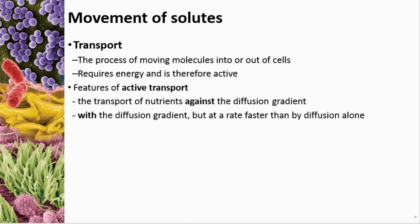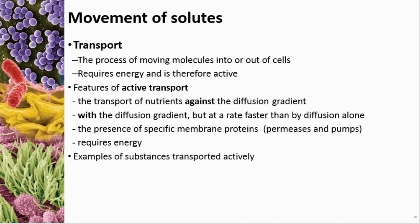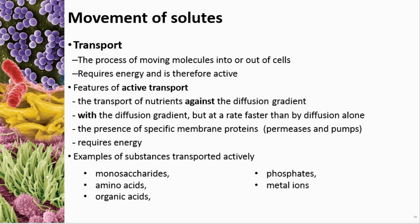Active transport requires specific membrane proteins such as permeases and pumps, like a sodium-potassium pump, and requires energy (ATP). Things actively transported include monosaccharides, amino acids, organic acids, phosphates, and metal ions. There are various ways these are actively transported, which we'll discuss shortly.